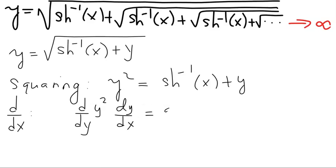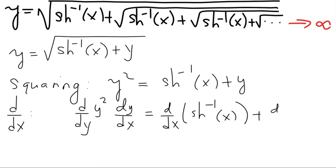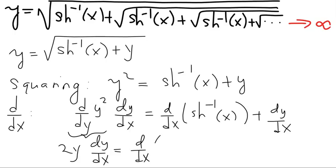The right-hand side is d/dx of arc hyperbolic sine of x — we will come back to this term in a minute — plus dy/dx. The left-hand side simplifies quite simply to 2y times dy/dx, which equals d/dx of arc hyperbolic sine of x plus dy/dx.